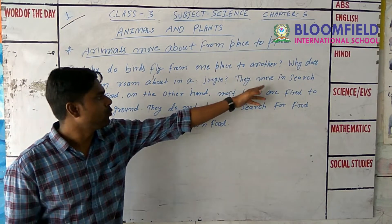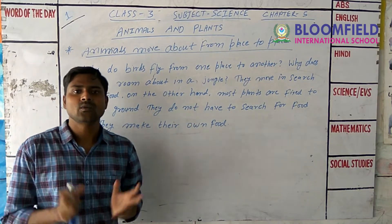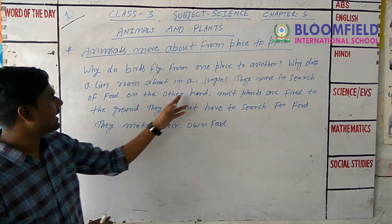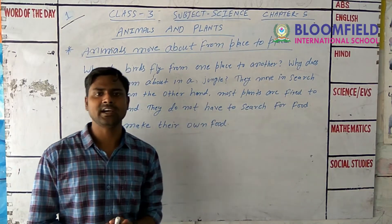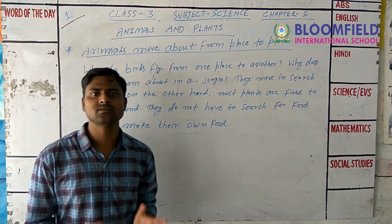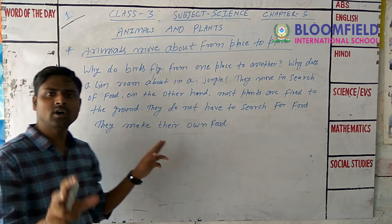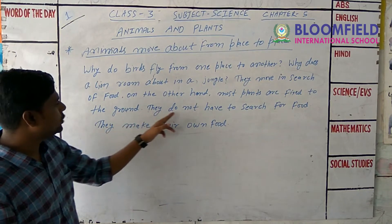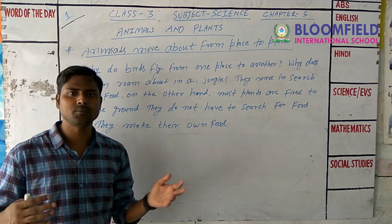Why does a lion roam about in a jungle? Animals move in search of food. On the other hand, most plants are fixed — they do not have to search for food from one place to another.